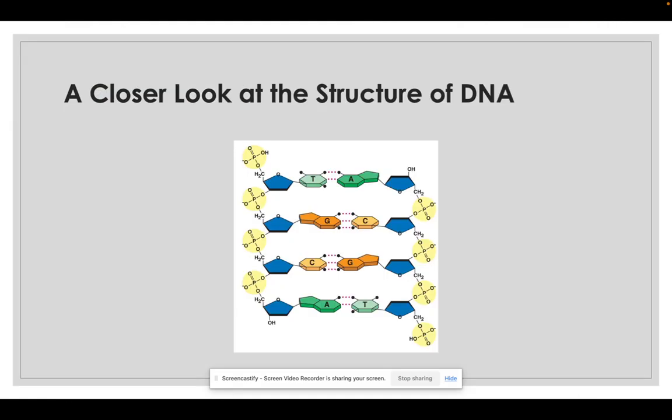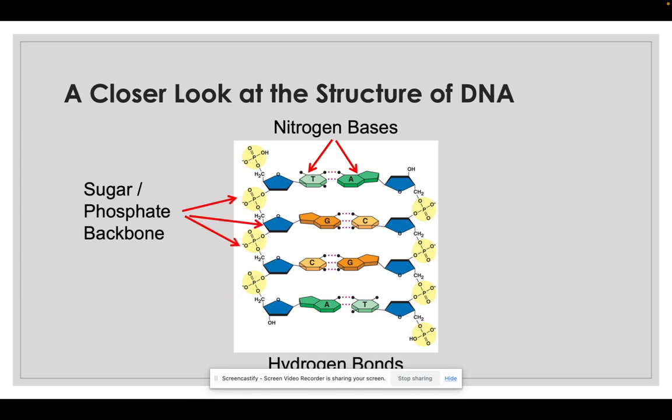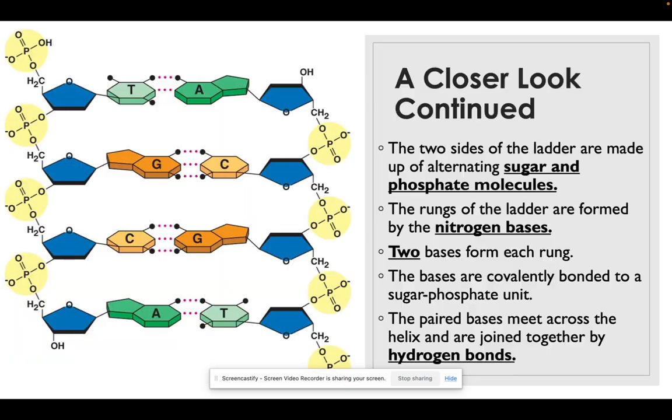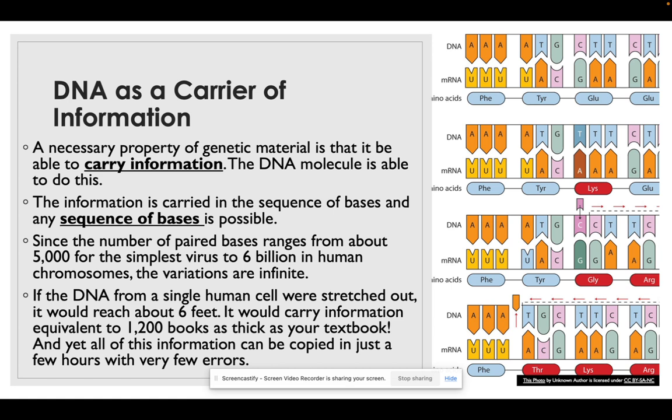This is a closer look at the structure of DNA. Again, I would heavily suggest labeling these on the graph or the image on the top of page three. You have the two nitrogen bases in the middle, the sugar-phosphate backgrounds, and then that hydrogen bond demonstrated in the middle. So two sides of the ladder are made up of alternating sugar and phosphates. The rungs in the middle are nitrogen bases. Two bases form each rung and the bases are covalently bonded to a sugar-phosphate unit. The paired bases meet across the helix and are joined together by hydrogen bonds.